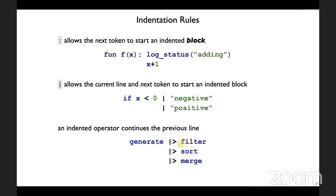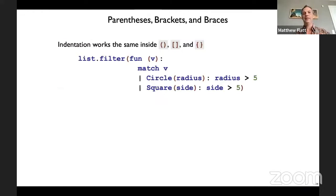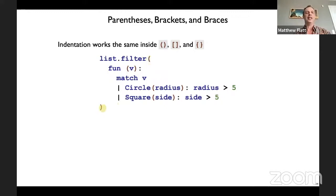Those are the indentation rules. When you have parentheses, square brackets, and curly braces, there are no new indentation rules — it just works the same on the inside. So I can have a function with its body nested under there, with conditionals, all as the argument to list. There is a little bit of a new indentation rule in that when you open a parenthesis you'll have a closing parenthesis, so the relative indentation of the content doesn't really matter — you can start it wherever you want.